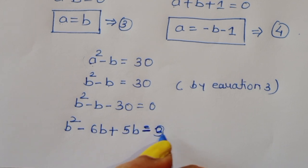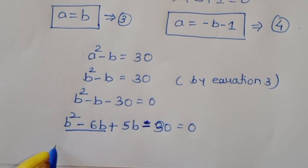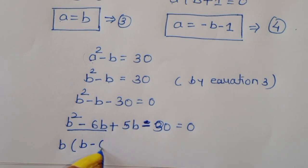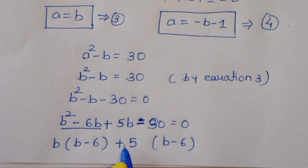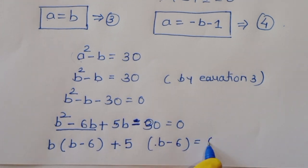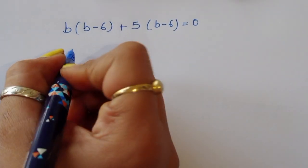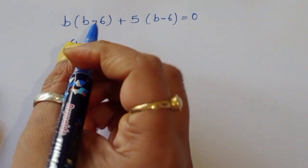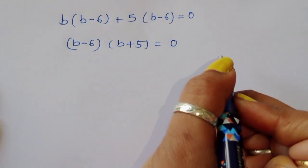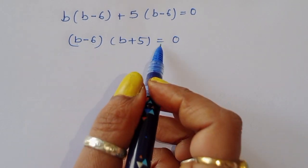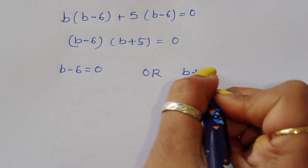Factoring b squared minus 6b plus 5b minus 30 equals 0: taking b common from the first two terms gives b(b minus 6), and taking 5 common from the last two gives 5(b minus 6). So we get (b minus 6)(b plus 5) equals 0.